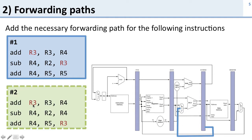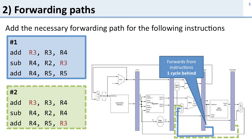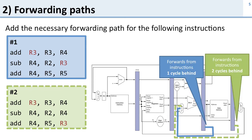For the second set of instructions, we're generating R3 in the first add and reading it in the second add, which is two instructions afterwards. So we need to forward from two stages before — from the write-back stage to the execute stage. The first add has its data in the write-back stage and we forward it to the execute stage for the second add. The blue path is for one cycle behind and the green is from two cycles behind.